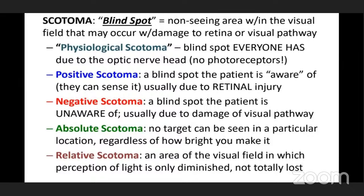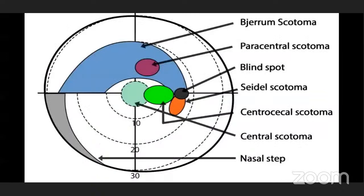Negative scotoma is a blind spot the patient is unaware of, usually due to damage of the visual pathway. Absolute scotoma is one where no target can be seen in a particular location regardless of how bright you make it — complete darkness. Relative scotoma is an area of the visual field in which perception of light is only diminished, not totally absent. Other types include arcuate scotoma, also known as arc-shaped scotoma.